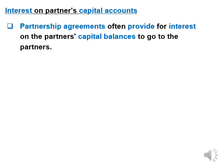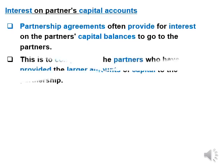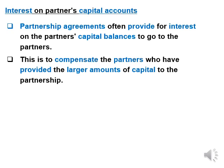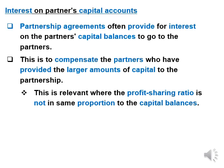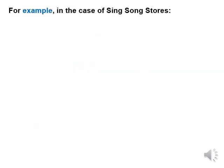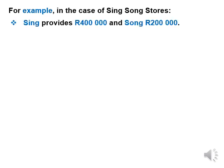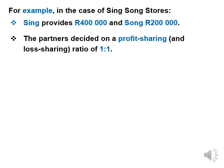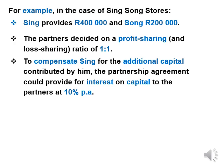Interest on partner's capital accounts: partnership agreements often provide for interest on partner's capital balances to go to the partners. This is to compensate the partners who have provided larger amounts of capital to the partnership, especially if the profit-sharing ratio is not in proportion to the capital balances. For example, when one partner provides capital of $80,000 and the other $40,000 yet the profit-sharing ratio is one to one. In the case of SingSong Stores, Sing provides 400,000 Rand capital and Song 200,000 capital, and the partners decided on a profit-sharing ratio of one to one.